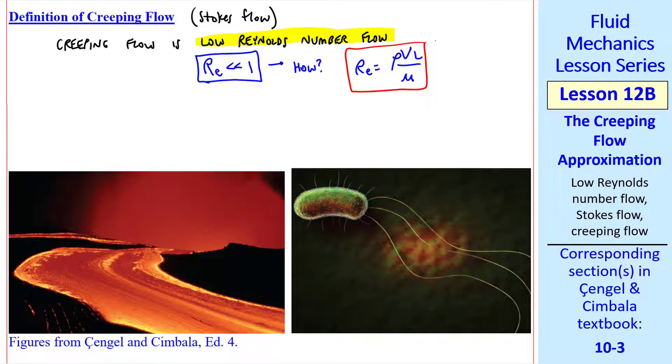How does this occur? Well, Reynolds number is defined as rho VL over mu, so Reynolds number is very small when either rho is very small, viscosity is very big, speed V is very small, or length scale L is very small.